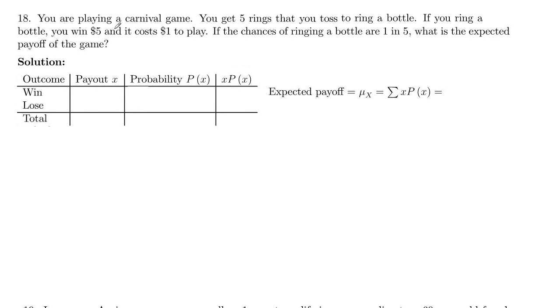In problem 18, we are playing a carnival game where you toss rings and try to ring a bottle. If you ring a bottle, you win five dollars and it costs a dollar to play. The chances of ringing a bottle are one in five. So we want to know what's the expected payoff for this game.